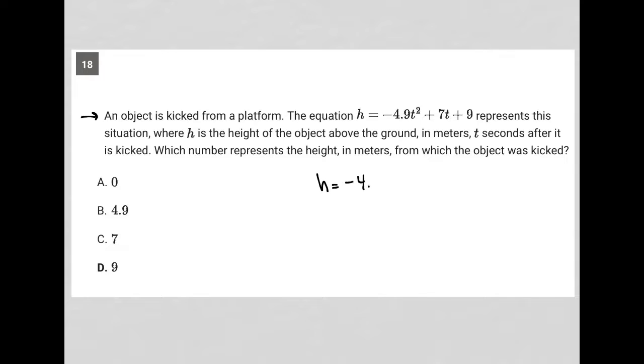h = -4.9t² + 7t + 9 represents this situation, where h is the height of the object in meters and t is time in seconds after it is kicked. Which number represents the height in meters from which the object was kicked?